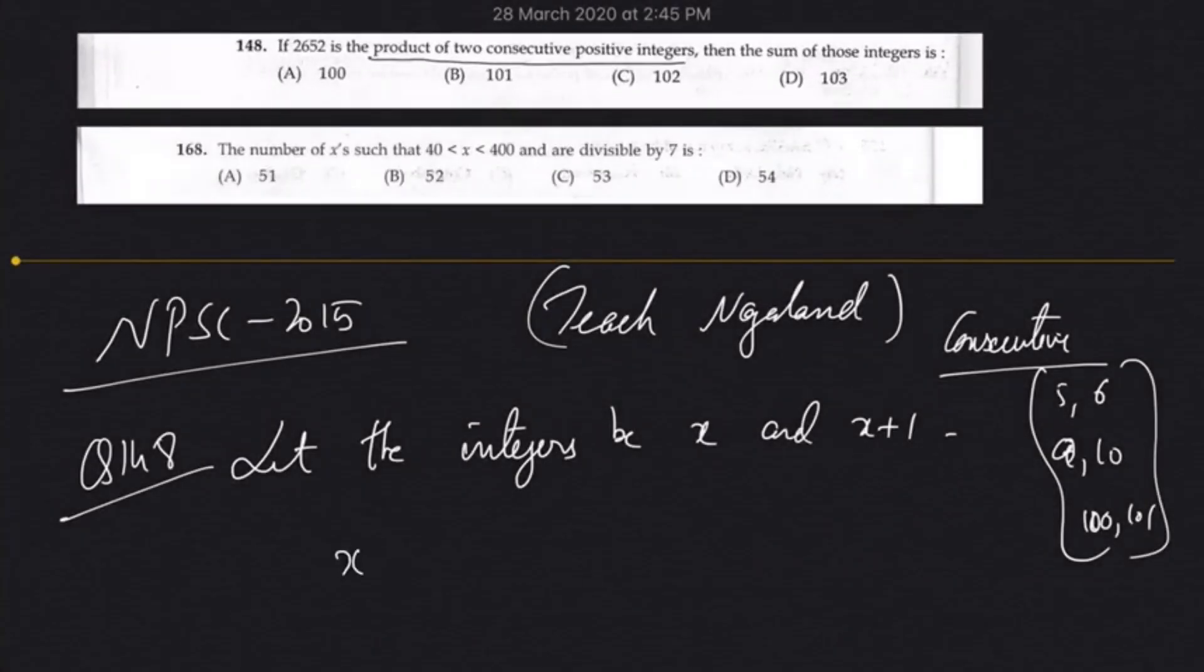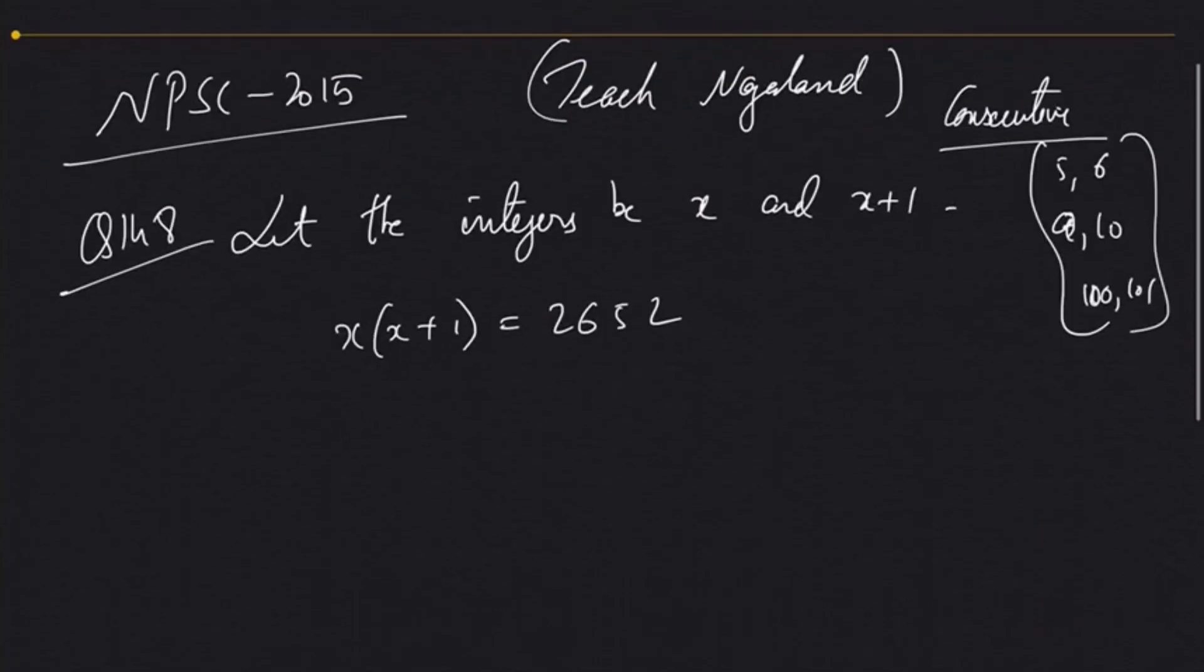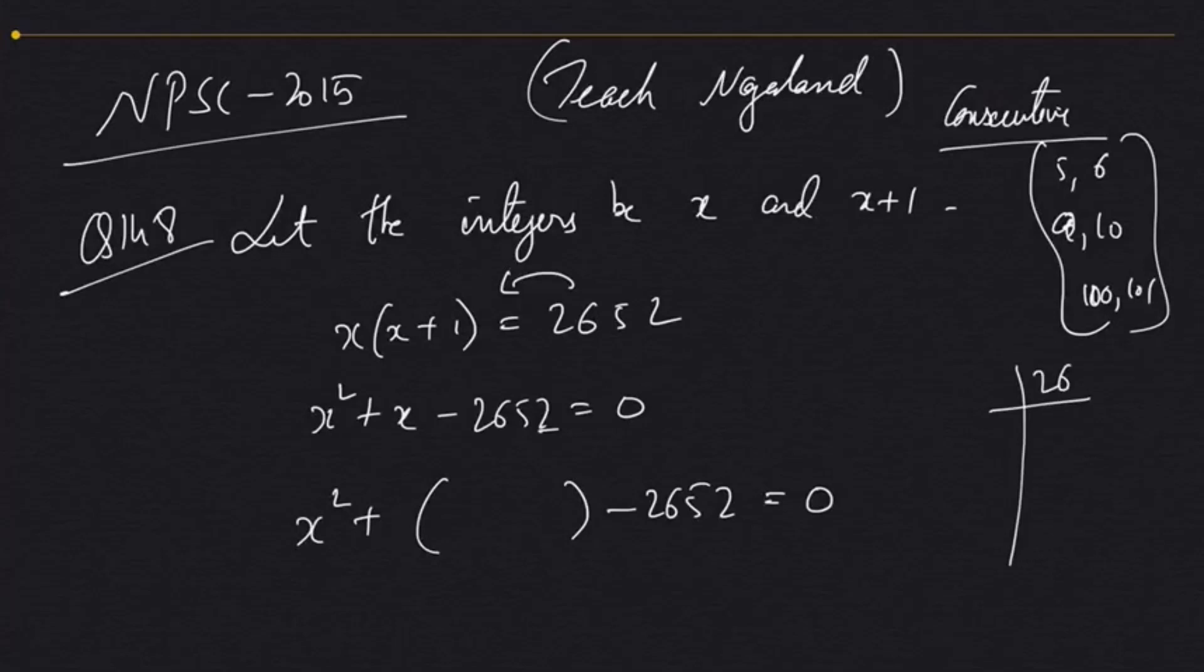Given that the product of the two consecutive integers is 2652, so x² + x - 2652 = 0. We will do this by the process of splitting the middle term. In some of the videos in class 9, I have done this process so you can kindly go through it.